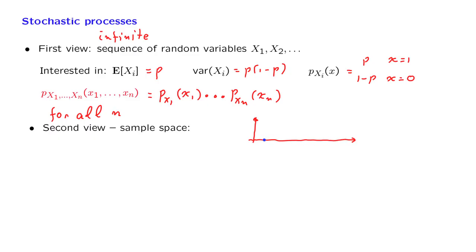For the Bernoulli process, we might get a 0, 0, 1, 0, 1, 1, 1, 0, and so on, and we continue.